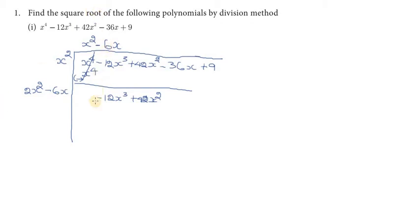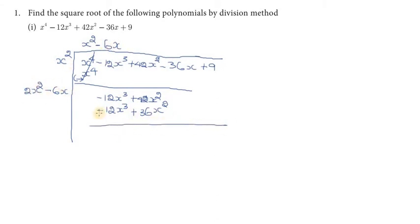We write minus 6 into 2, which gives minus 12, and x into x square gives x cube. Then minus into minus is plus, so 6 times 6 is 36, and x into x gives x square. We multiply and subtract. So 42 minus 36 gives the next remainder, and we bring down the remaining terms.